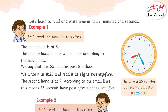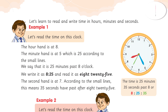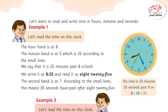Similarly, calculate seconds the same way. The second needle points to 7, so we multiply 7 by 5, giving 35. So you write the time as: 8 hours in red, 25 minutes in blue, and 35 seconds in green.